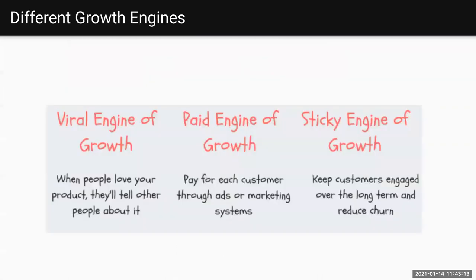Directly from Lean Startup is this idea of growth engines, and there are different types. For a viral growth engine, that is something that we can measure where things spread like a virus. We look at the coefficients to see if it's being effective — are we getting enough distribution of whatever it is that we're selling or providing?